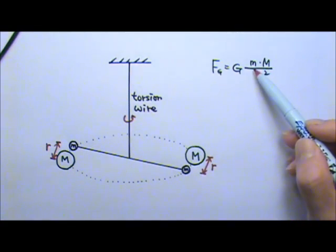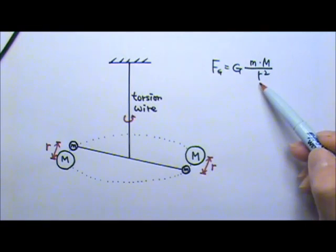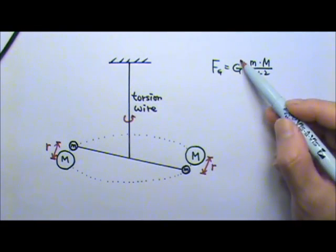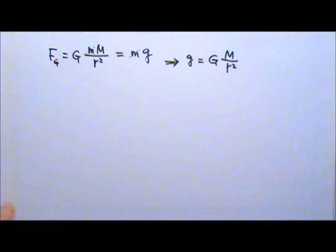Since M, M, and R could be measured, Cavendish could find the value of G. A side note here. What Mitchell, Cavendish, and others were really trying to measure was the density of the earth. You know, Mitchell was a geologist.